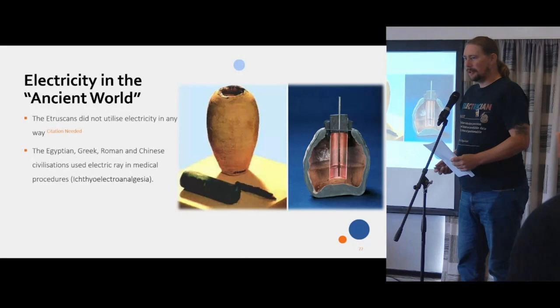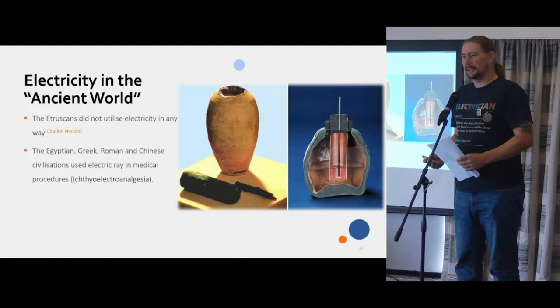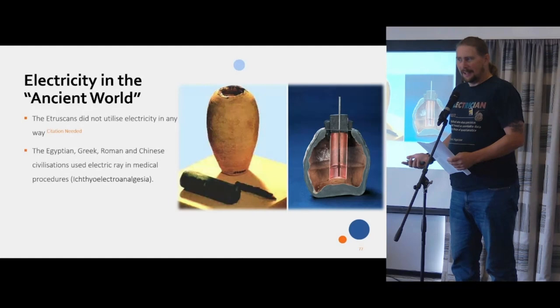For example, the Roman Empire used electrical rays to treat patients, especially with ailments such as gout. What they'd do is have the patient step on the electric ray and have them electrocute them until they were numb up to the knee. And then they'd just step off if they could.